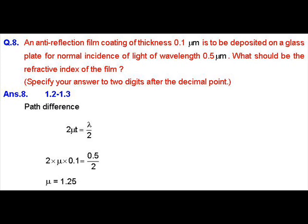Now, we have been asked to calculate what should be the refractive index of the film. So, as we know that the path difference because of the anti-reflection film will be equal to 2 mu t, which is equal to lambda by 2.